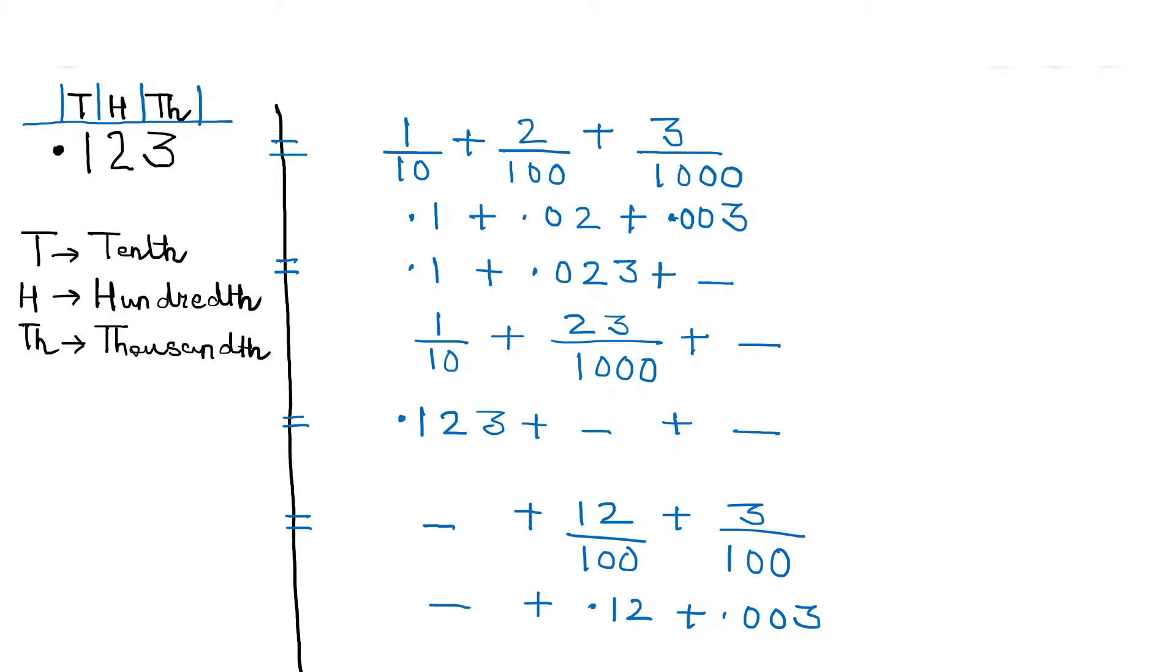So how many cases are there in which we have represented a non-integer which is 0.123? How many cases have we written? We have written four cases. So 0.123 can be written in the expanded form in four different ways. Let us quickly talk about those four ways.